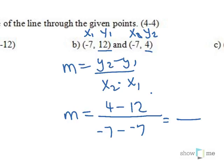In my numerator, I get 4 minus 12 is negative 8. In my denominator, negative 7 turns into plus, so I get 0.